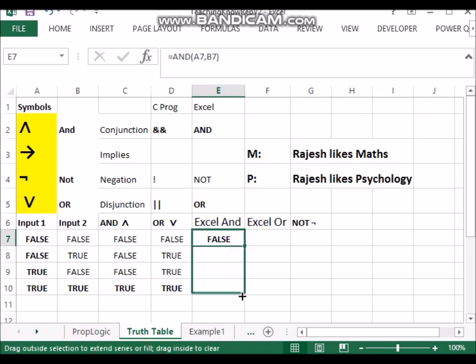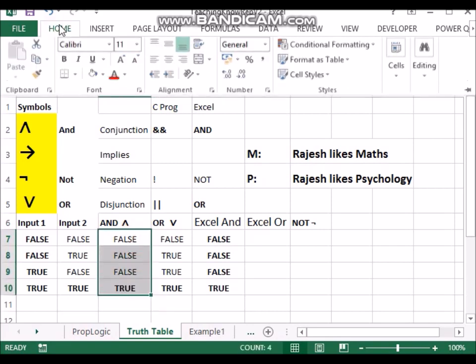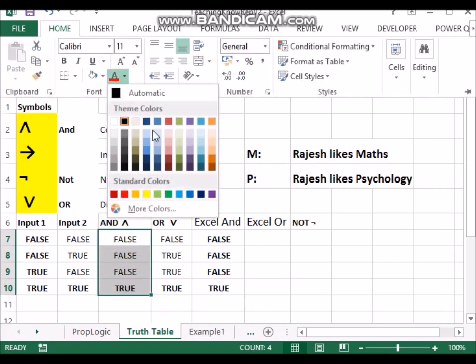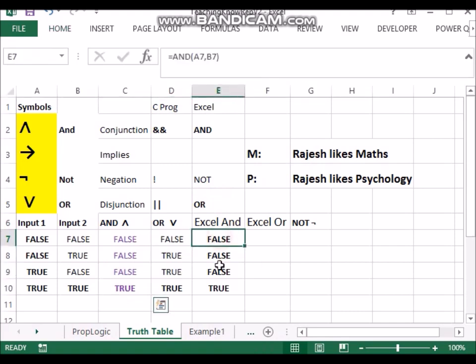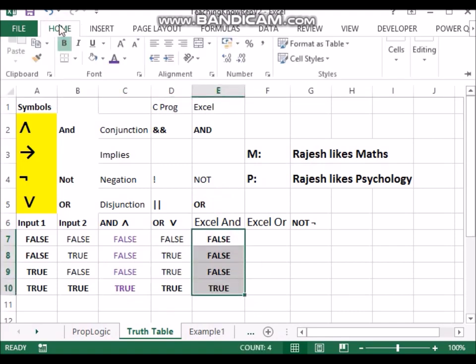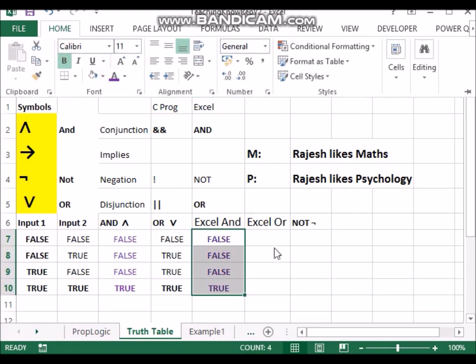So I could have said is equal to and and I could have given this statement, comma this statement. And as expected false and false gives false. And if I drag this thing down, you will notice it is the same thing as we got here. So this one is same as this one, what we got in Excel. Obviously it's the same function. We will get the same thing as expected.